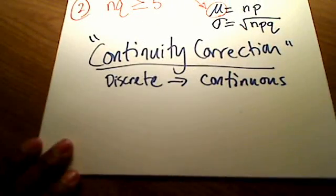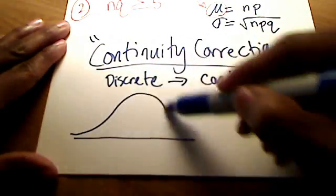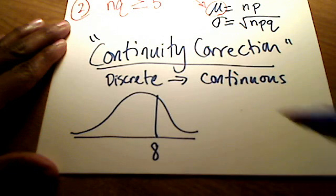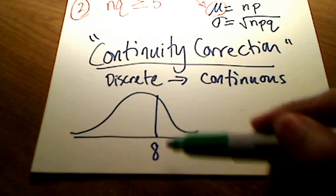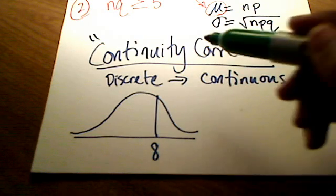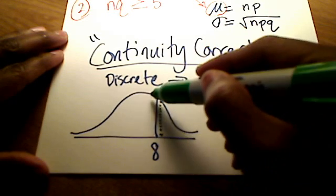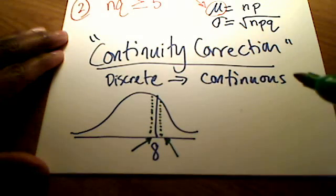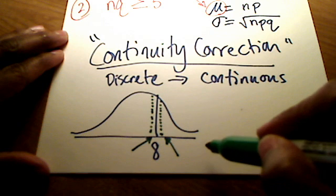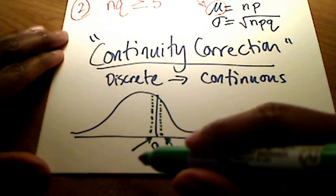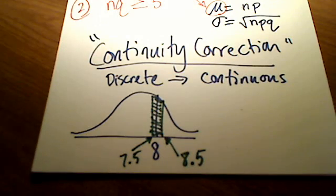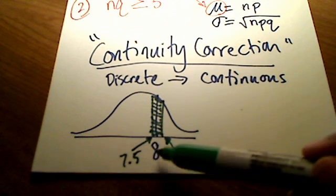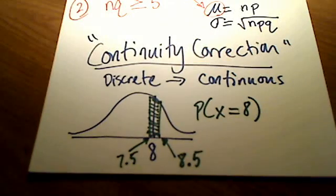For example, if I'm interested in the probability of an exact number — let's use 8 — continuity correction says that's too discrete, because the area of this little skinny line is actually just 0. So what I'm going to do is move just a little bit to the right and to the left — by convention, 0.5. So just to the right of 8 is 8.5, and just to the left of 8 is 7.5. I'm actually going to find the shaded area between 7.5 and 8.5.